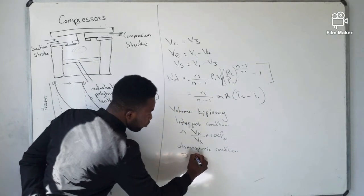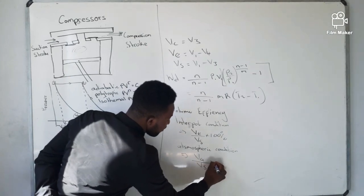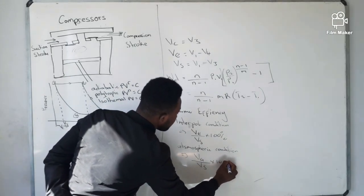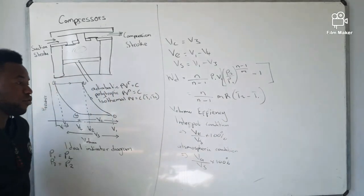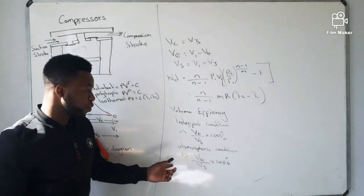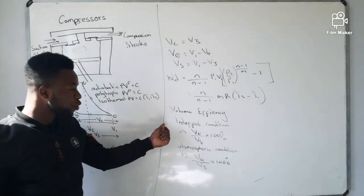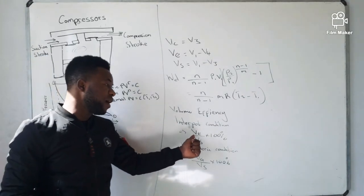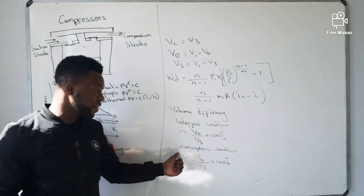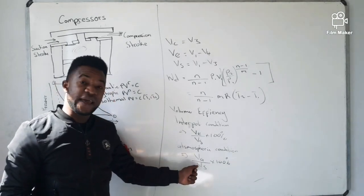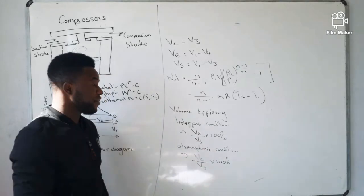On the atmospheric condition, the formula is also VE over Vs multiplied by 100%. So to summarize: when given the internal condition, use VE over Vs times 100%; when given the atmospheric condition, also use VE over Vs times 100%.